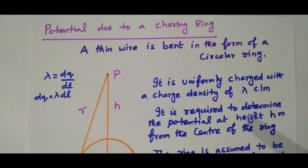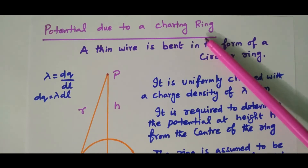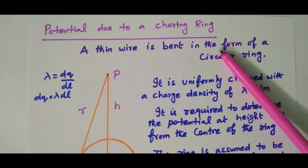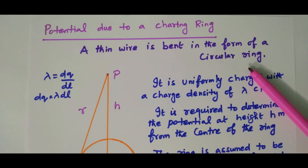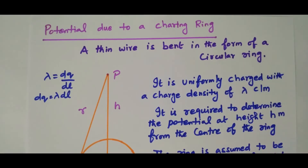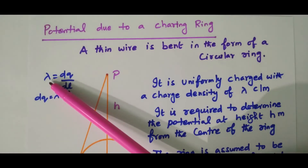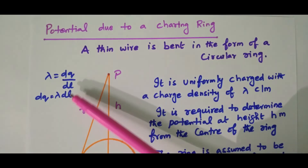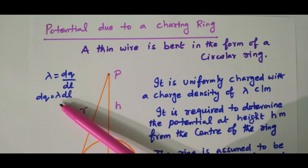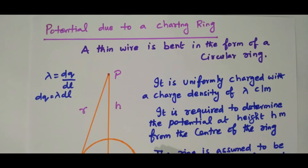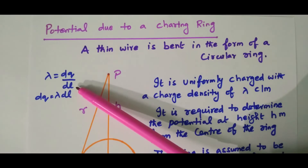Now we will see the potential due to the charged ring. The disk derivation is completed. A thin wire is bent in the form of a circular ring by joining its two ends together. The length of the wire equals the circumference of the ring. Since we have a lengthy wire, we use linear charge density lambda, where lambda equals dq divided by dl, so dq equals lambda times dl.